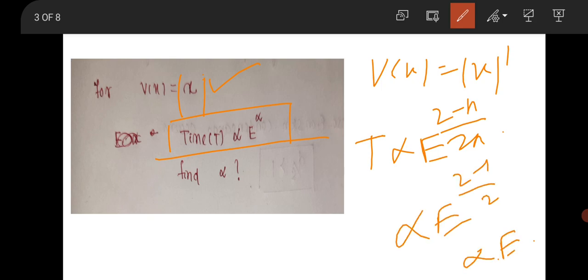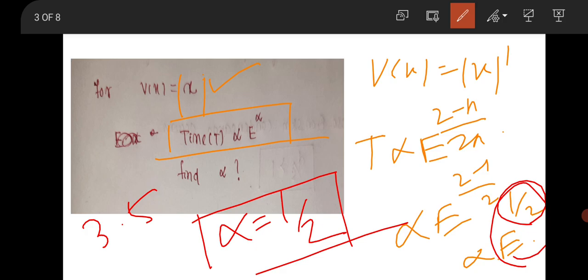Put n equals 1, it will be E to the power (2-1)/2, that is E to the power 1/2. So alpha will be 1/2. This question was for 3.5 marks in Part B.